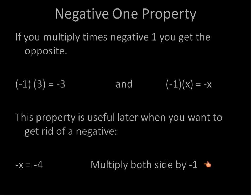Here's an example. If I have negative x is equal to negative 4, I multiply both sides by negative 1. And what does that do for me? Negative x times negative 1, I get the opposite or positive x. Negative 4 times negative 1 gives me the opposite or positive 4. And so I can get rid of, if x is equal to 4, then negative x is equal to negative 4.